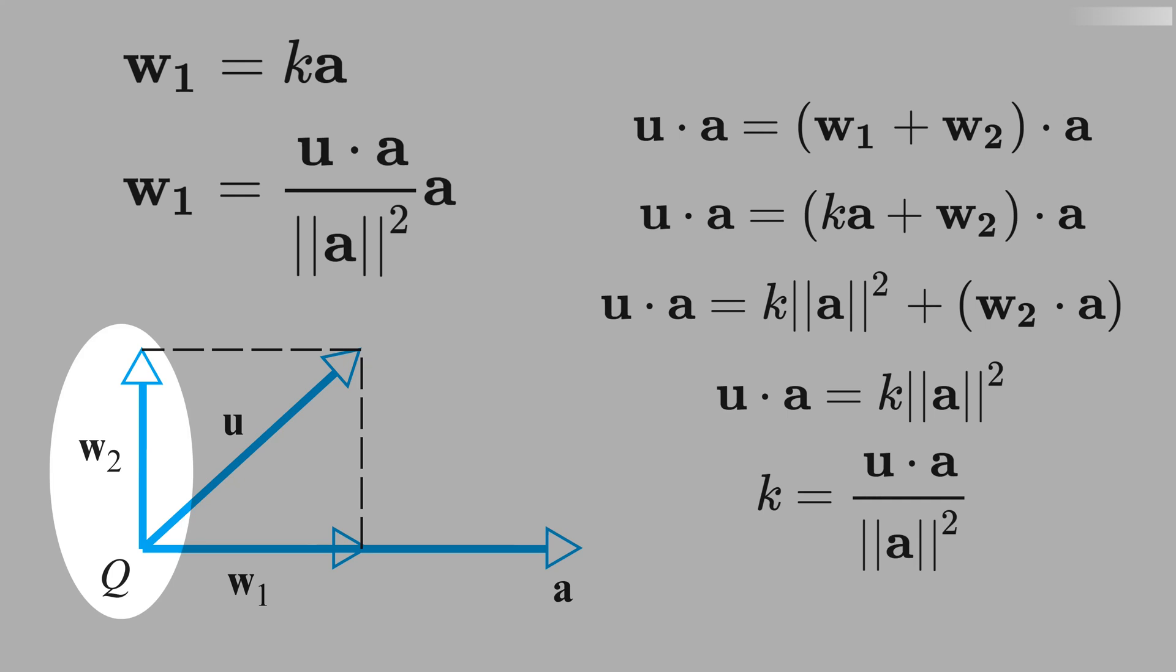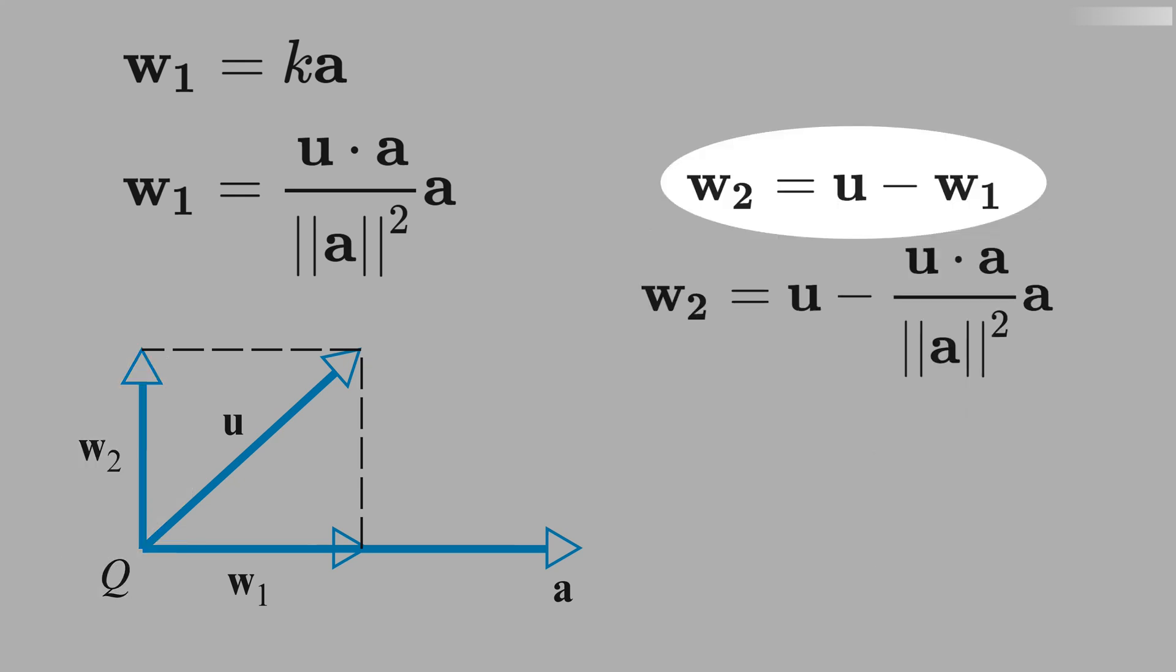And what about w2? w2 is just u minus w1. We also call w2 the vector component of u orthogonal to a.